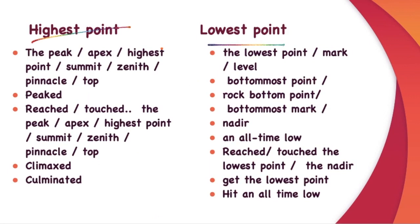Now if you're talking about the highest and the lowest point, you can use these words. Highest point: the peak, apex, highest point, summit, zenith, pinnacle, top. These are nouns. Verb is peaked, reached, touched the peak, apex or highest point or summit or zenith or pinnacle or top. Climaxed, culminated. The lowest point is the lowest point, mark, level. Instead of point, you can say lowest mark, lowest level or bottom most point, rock bottom, bottom most mark, nadir, an all time low. Reached the lowest point or touch the lowest point or reached nadir, hit the lowest point or hit an all time low.